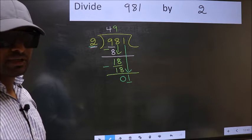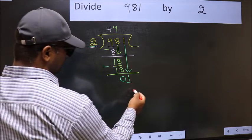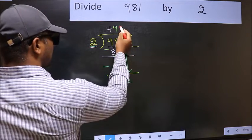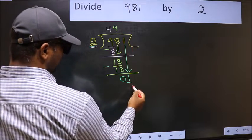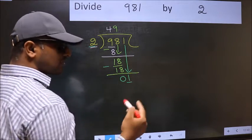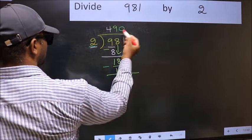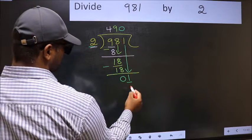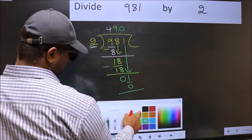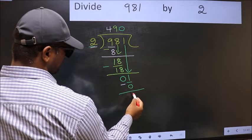Instead, what you should think of is what number should we write here? If I take 1, we get 2 here. But 2 is larger than 1. So what we should do is we should take 0. So 2 into 0, 0. Now you should subtract 1 minus 0, 1.